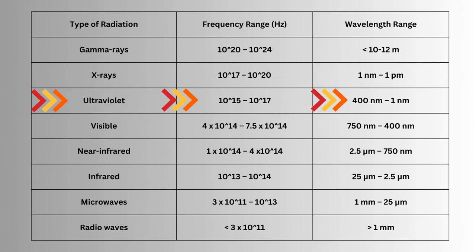Ultraviolet: 10^15 to 10^17, 400 nanometer to 1 nanometer. Visible: 4×10^14 to 7.5×10^14, 400 to 750 nanometers.